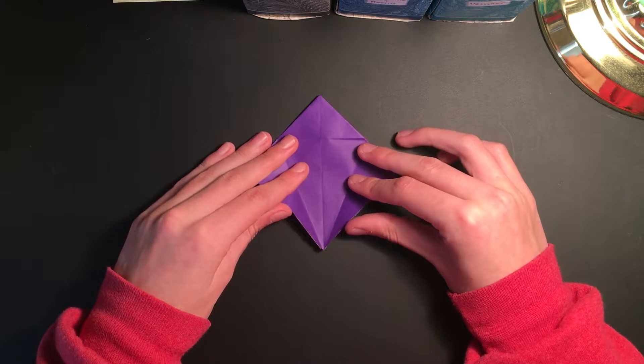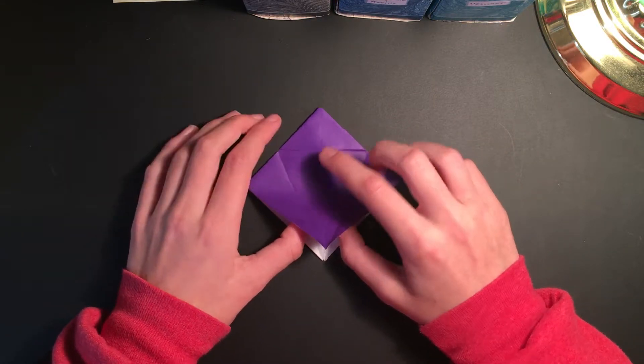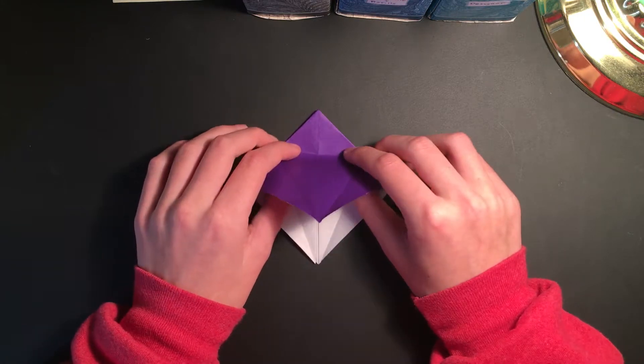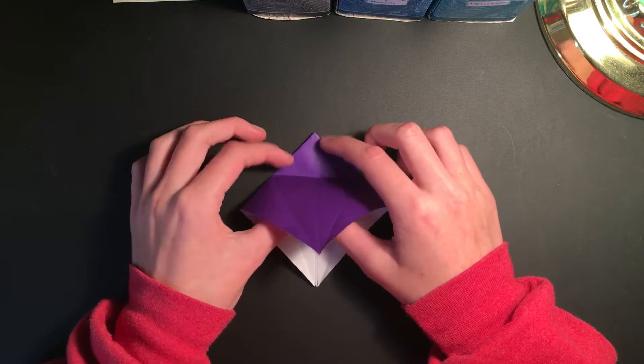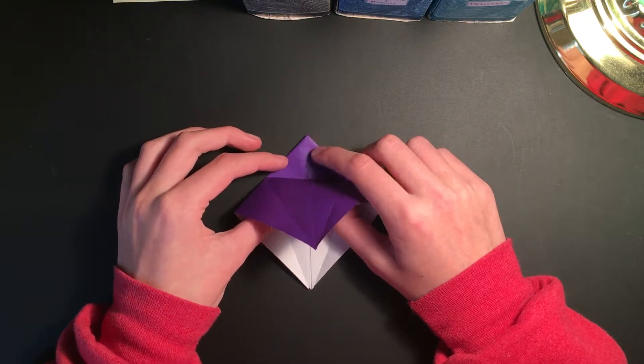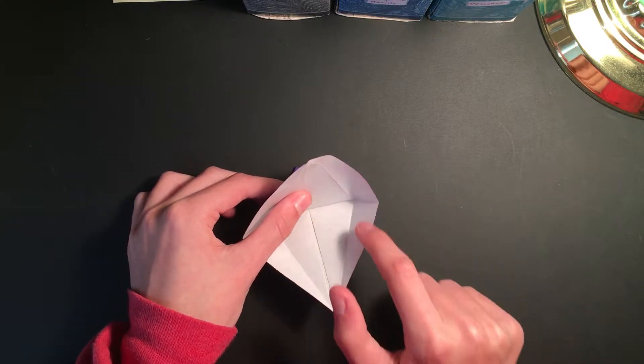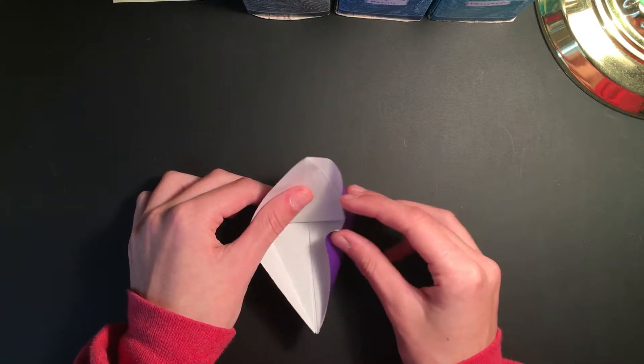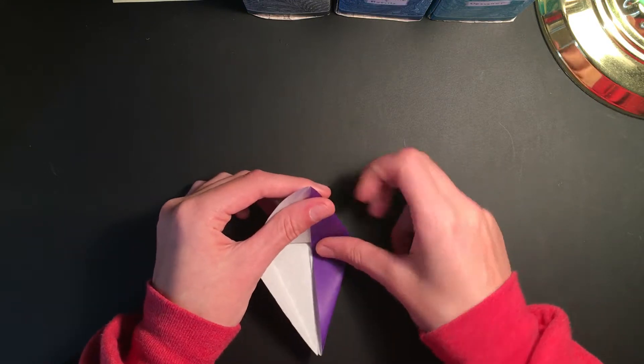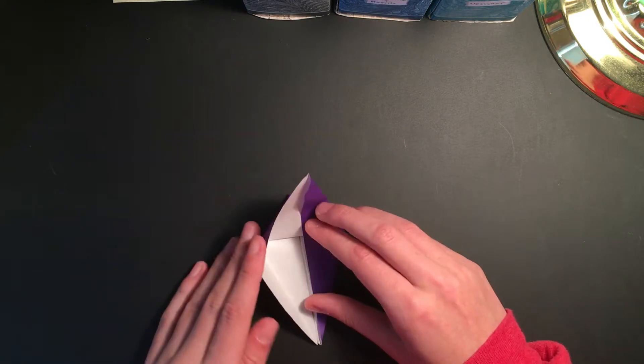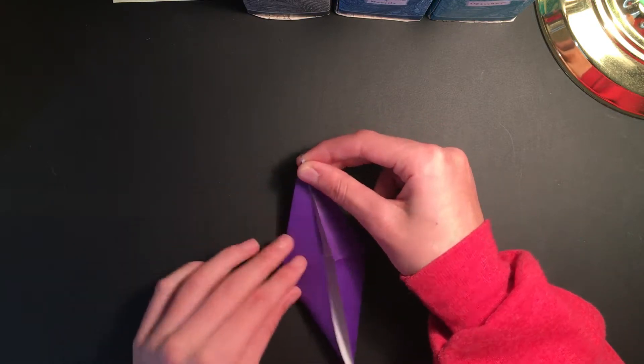Take this part slowly because it is the most complicated part. We're going to just bring this up to the line, not revealing the inside of this triangle here. Now we're going to reverse these creases and just bring it in like that, and do the same on the other side as well.